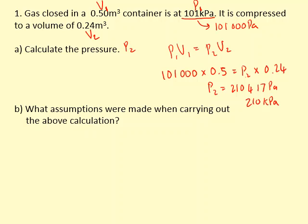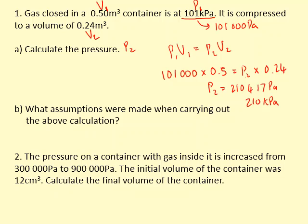The pressure in a container with gas inside is increased from 300,000 pascals to 900,000 pascals. The initial volume of the container was 12 cubic centimeters. Calculate the final volume of the container.